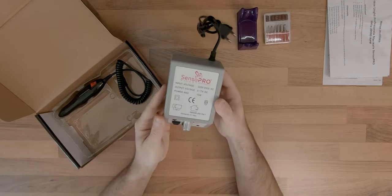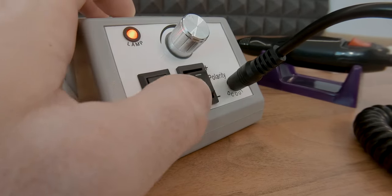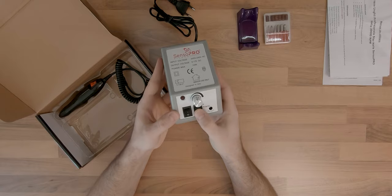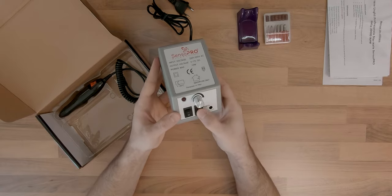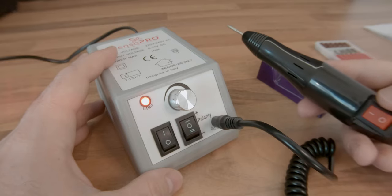It comes with an on-off switch with power LED indicator, a polarity switch for changing the drill spinning direction, and an aluminum knob for adjusting the RPM of the drill.